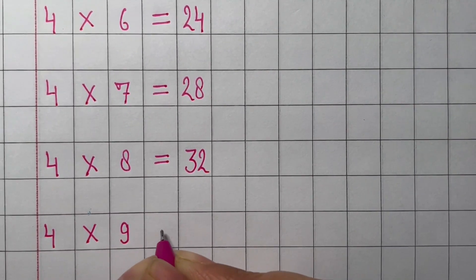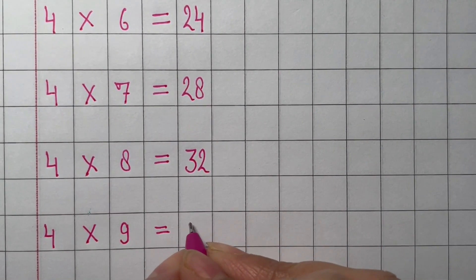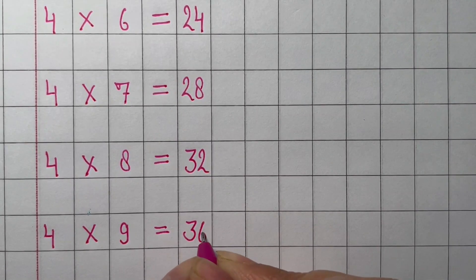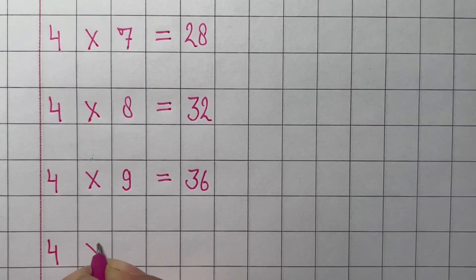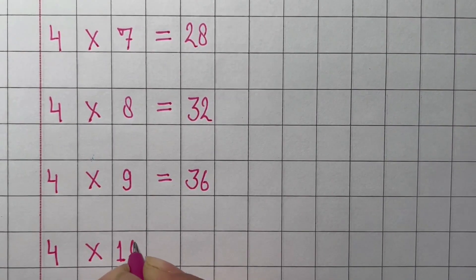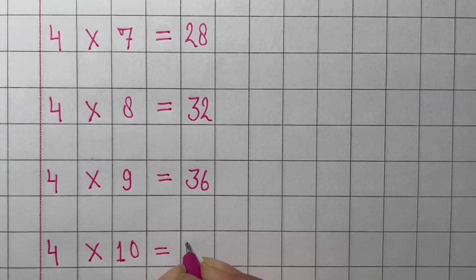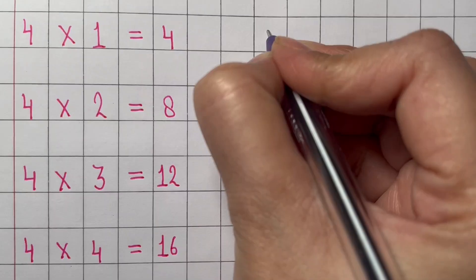Nine times 4 equals 36. And ten times 4 equals 40.